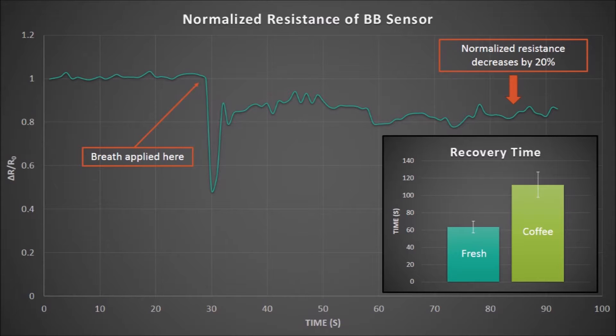Furthermore, the inset recovery time graph shows that it takes twice as long for bad breath samples to recover to the baseline resistance than for fresh breath samples. Both of these results support our hypothesis that this behavior is due to chemical doping.